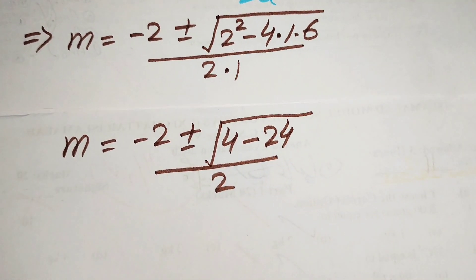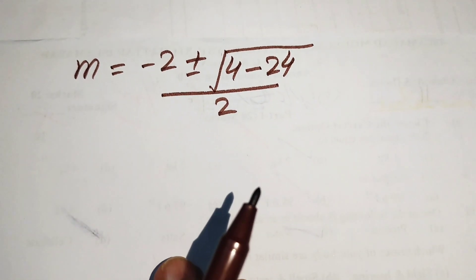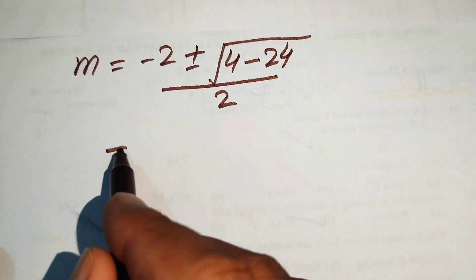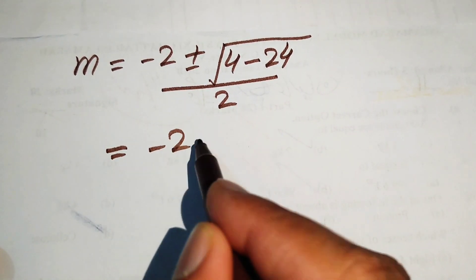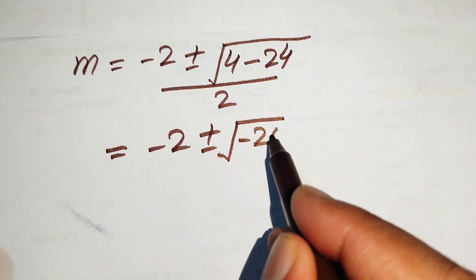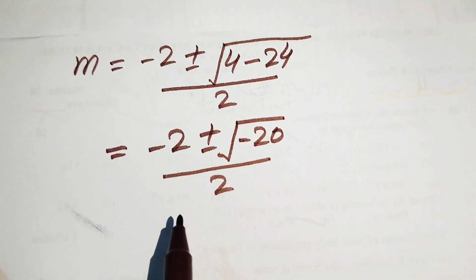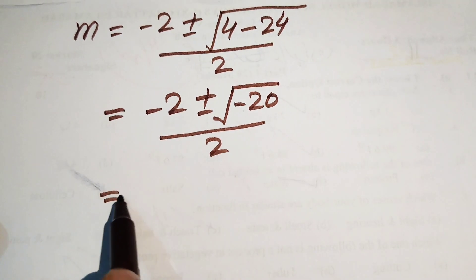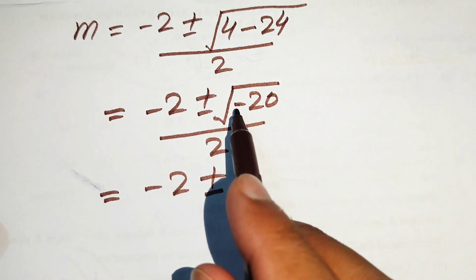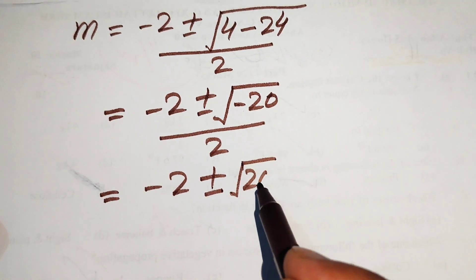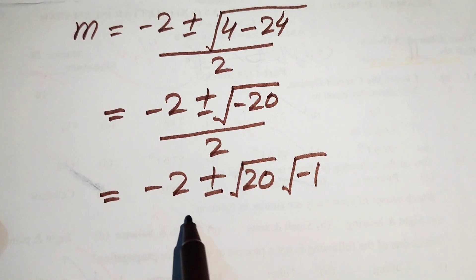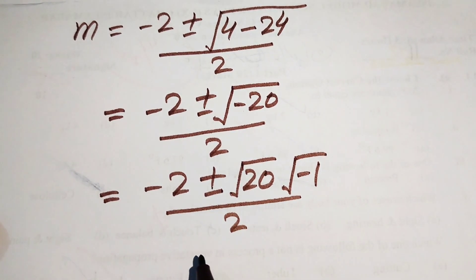Simplifying further, 4 minus 24 equals minus 20. So we have minus 2 plus or minus square root of minus 20, divided by 2. We rewrite this as minus 2 plus or minus square root of 20 times square root of minus 1, divided by 2.